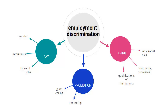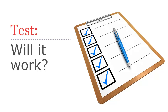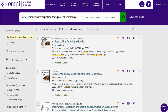Once you've done brainstorming, pick one of the smaller things to focus on. Here I'll choose how immigrant qualifications are viewed in hiring. Before you go any further with your new topic, you need to test it to be sure it's workable — there needs to be enough information on it to write a paper. The best way to do this is to do a quick search in a library database on your topic, to see how much scholarly information you can easily find. On our topic I found more than 2,000 results, which means it's workable.